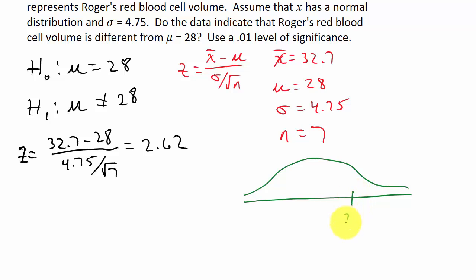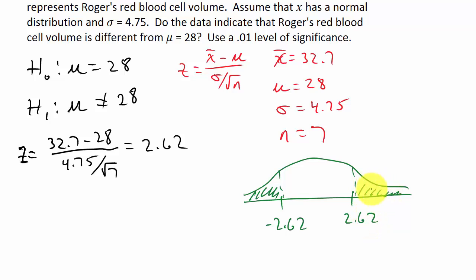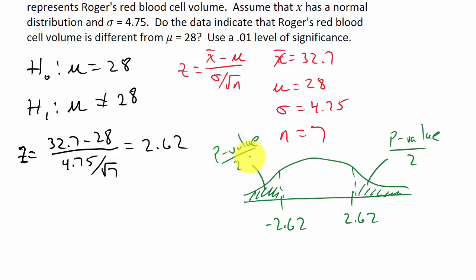We got Z equals 2.62 and negative 2.62 — this is a two-tail test, so we need both tail areas. We can look up 2.62 and that gives us the right-tail area; then we multiply by two. Just looking that up alone is not our P-value — it's half the P-value. The P-value is this area plus this area, so each side is P-value over 2 because it's a two-tail test.